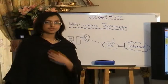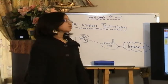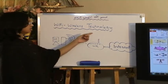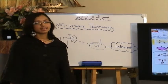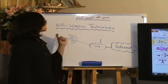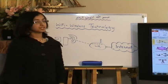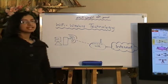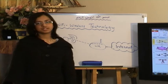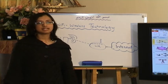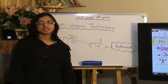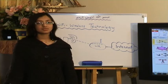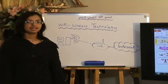This is our second class and my first class, and we're going to be discussing about the topic Wi-Fi, or wireless technology. Now what's a Wi-Fi? A Wi-Fi is a type of wireless technology. The correct definition for Wi-Fi is that it's a standard, or a specification, to implement a wireless network.